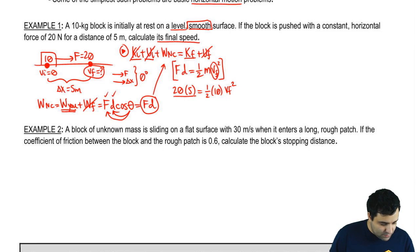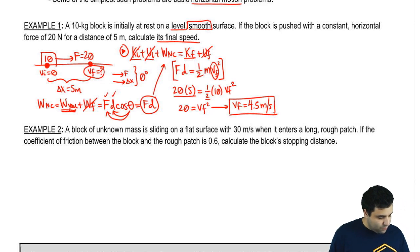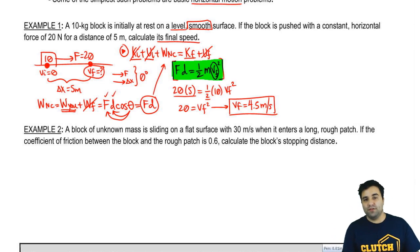If I move around all the numbers, this is 100 times 2 is 200 divided by 10 is 20. So v final squared equals 20, and v final is the square root of 20, which is roughly 4.5 meters per second. But the most important part is obviously the setup. Once you get here, the rest is just algebra. That's it for the first example.